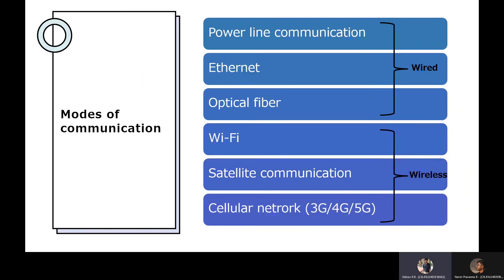When we look at the modes of communication, it is done by wired or wireless communication. Examples of wired communication include power line communication, Ethernet and optical fiber. Wireless communications include Wi-Fi, satellite communication and cellular networks.